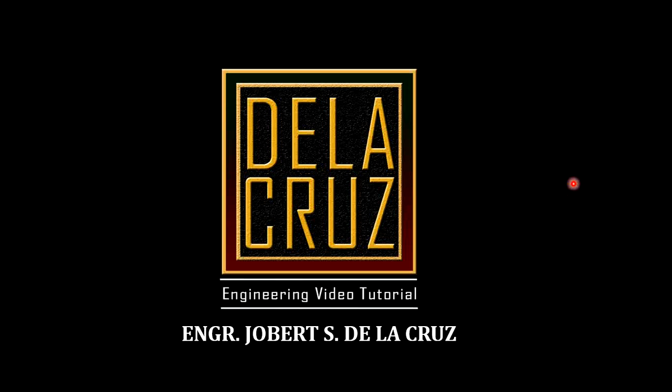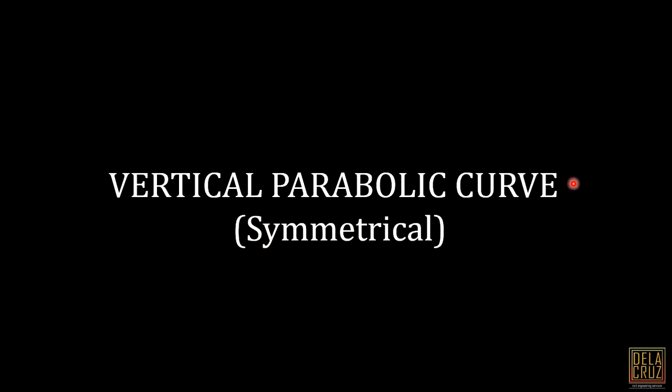In this video, we will solve problems about the vertical parabola curve, specifically the symmetrical curve. We have two types of curves: symmetrical and unsymmetrical. For a symmetrical curve, we consider only one parabola, while for an unsymmetrical curve, we consider a combination of two or more parabolas. In most common cases in board exams, we only encounter symmetrical curves.